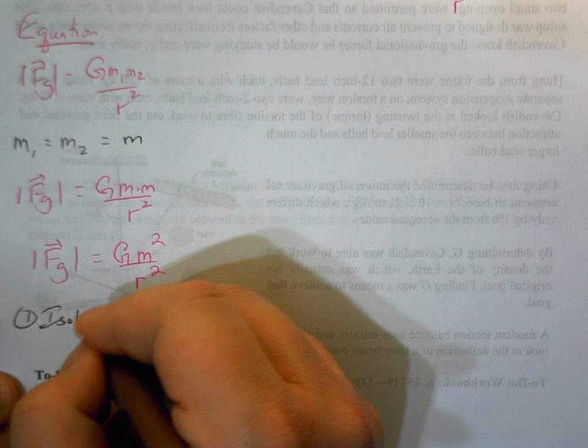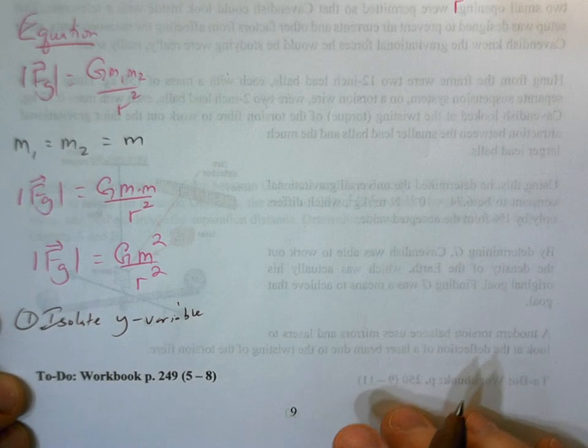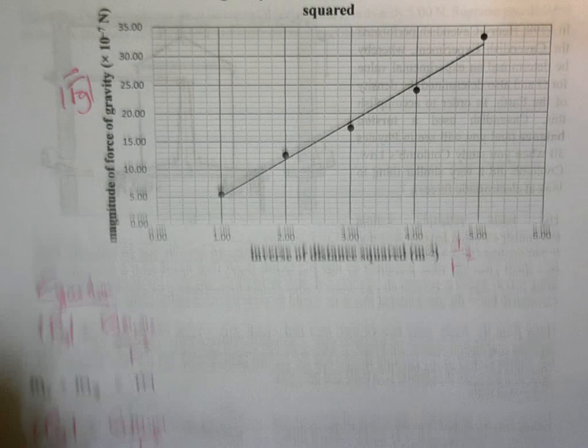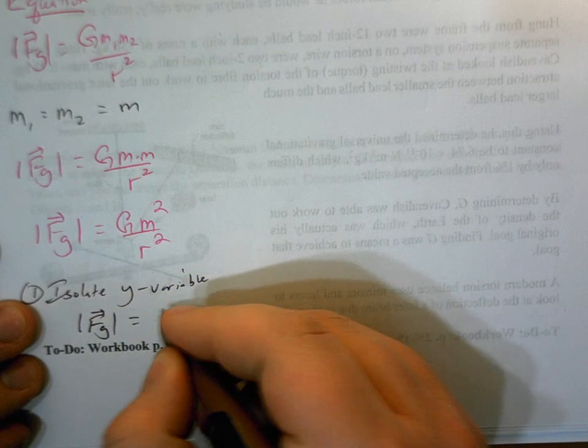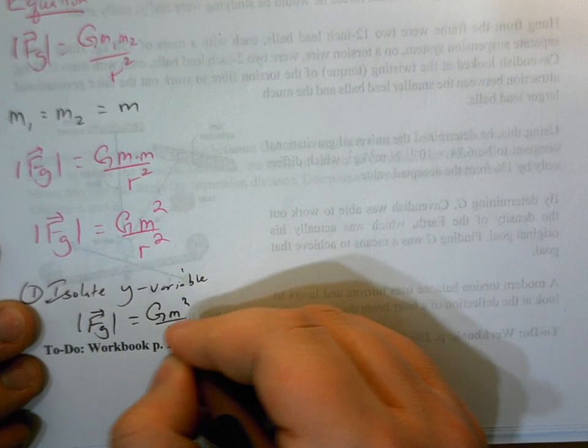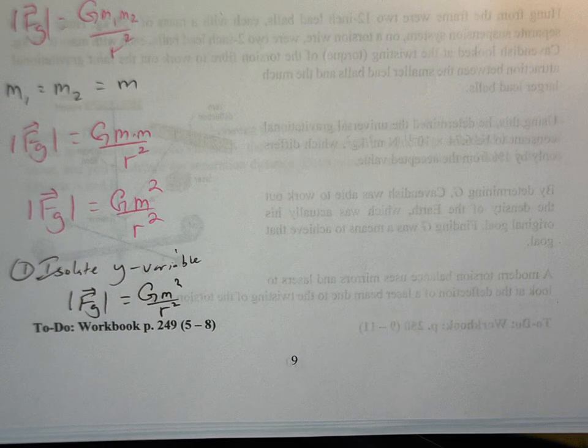So we want to isolate the Y variable. Well, good news, the Y variable is FG. We already have that. So I guess step one is complete. And I've mentioned before that a lot of times you will have that already done. The Y variable will be isolated.